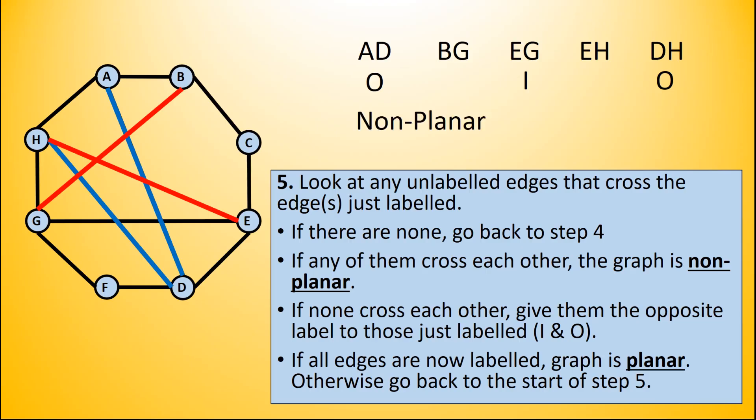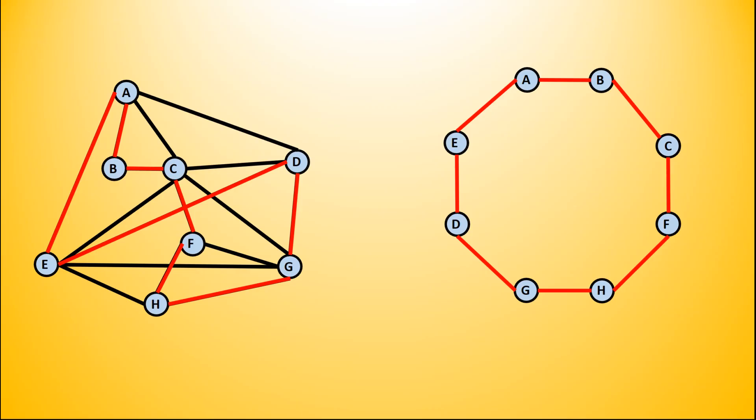For our second example, we have a slightly more complicated graph with a lot more going on in it. We follow the same process to start with, first of all finding a Hamiltonian cycle. This is the one that I have found, and we draw our polygon accordingly. We then put the edges inside.